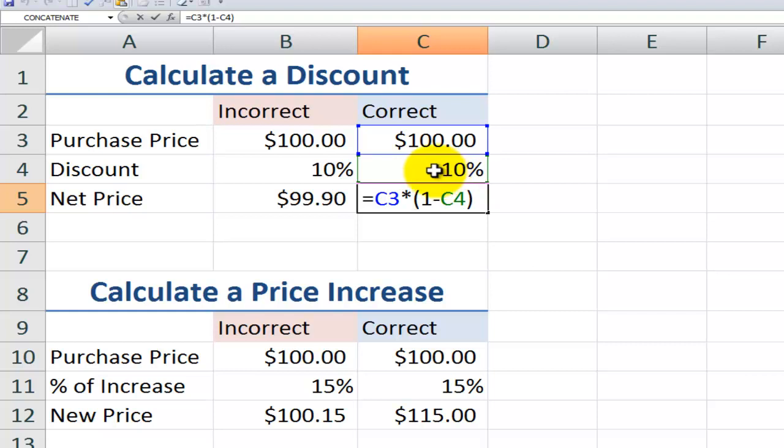So instead of paying full retail, we're paying 90% of the retail price. And the way that we get the correct response is by using the left and right parentheses to control the order of calculation.